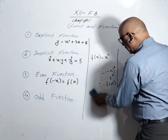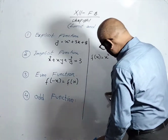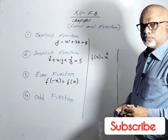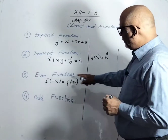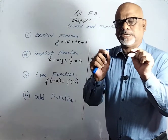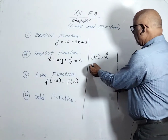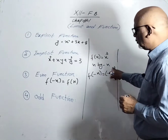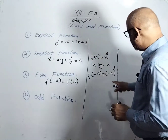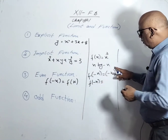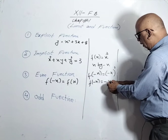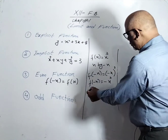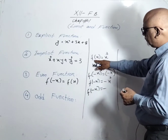Now we have to discuss the odd function. We use the same strategy — replace x by -x. Let's suppose f(x) = x³. When we replace x by -x, we get f(-x) = (-x)³ = -x³. This is because when the power is odd, the negative remains negative. So f(-x) = -x³.